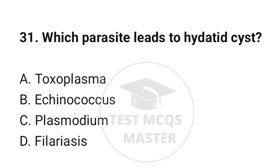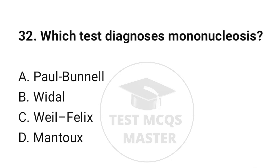Question number 31: Which parasite leads to hydatid cyst? The correct option is B: Echinococcus. Question number 32: Which test diagnoses mononucleosis? The correct option is A: Monospot test.